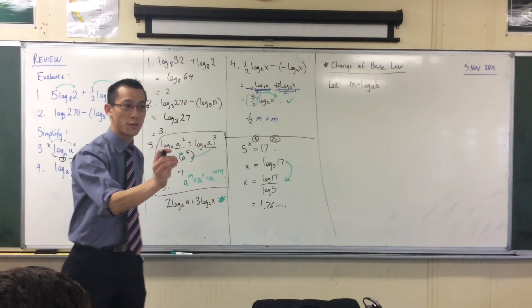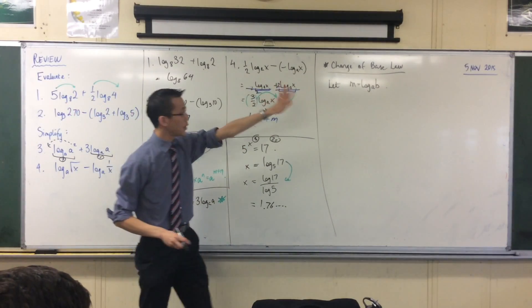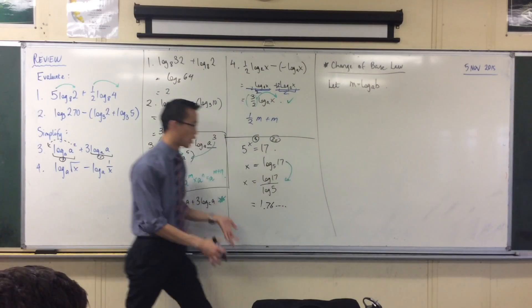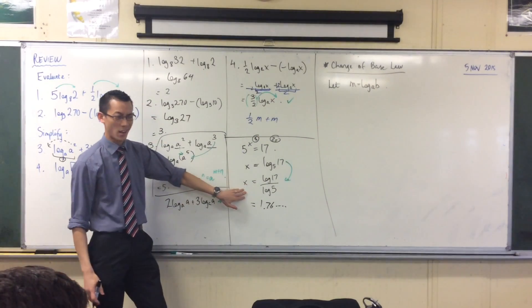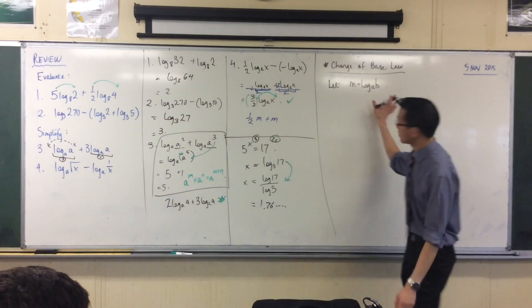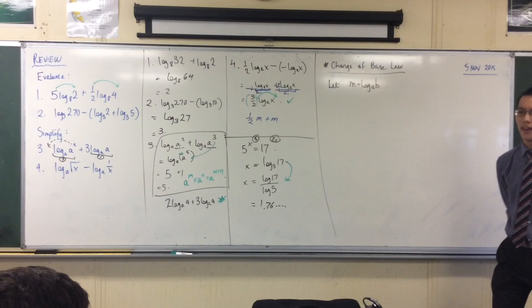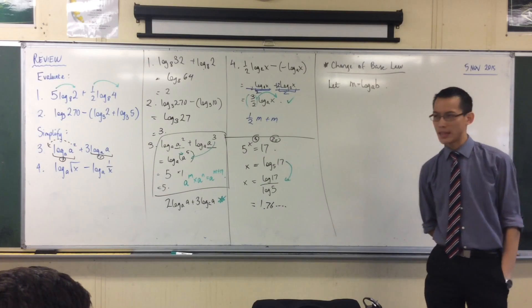So what I'm going to prove to you is a result that will always work. Not just one that, like, sometimes work for these particular numbers. So, if I've written this as a log equation, how could I rewrite the same equation in exponential form? Like, with indices.